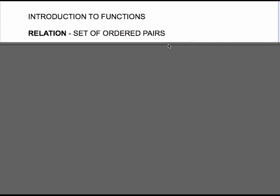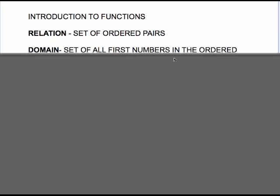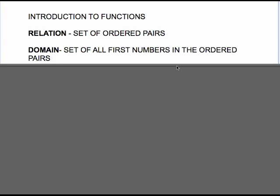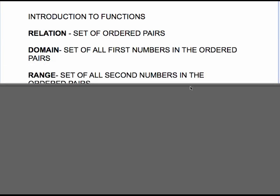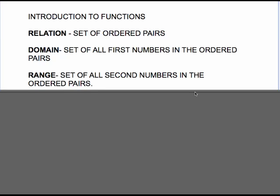A relation is just a set of ordered pairs. The domain is a set of all first numbers in the ordered pairs and the range is a set of all second numbers in the ordered pairs.